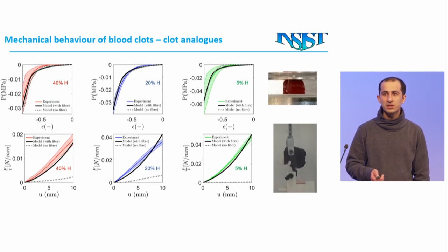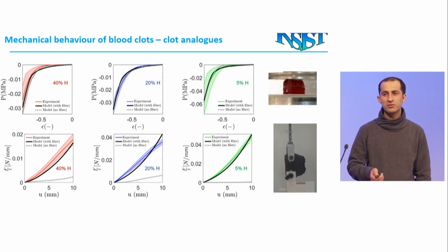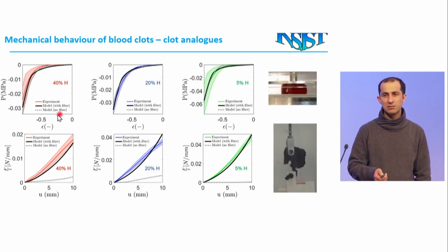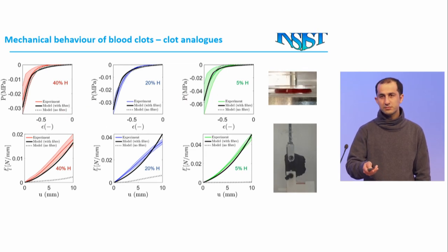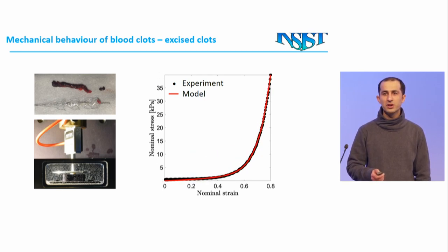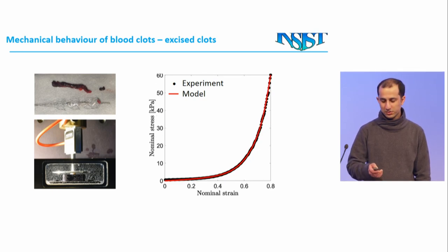The next step is to characterize the mechanical behavior of blood clots. There are a wide range of blood clots, from those with high content of fibrin to those with high content of red blood cells. We tested all types of these clots under different mechanical loading including compression and tension, and found that the behavior of the clots is very different based on composition. The fibrin-rich clots are much stiffer compared to the red blood cell-rich clots. We also tested real clots retrieved from patients and found that their mechanical behavior is very close to what we found from our synthetic clots made in the lab.